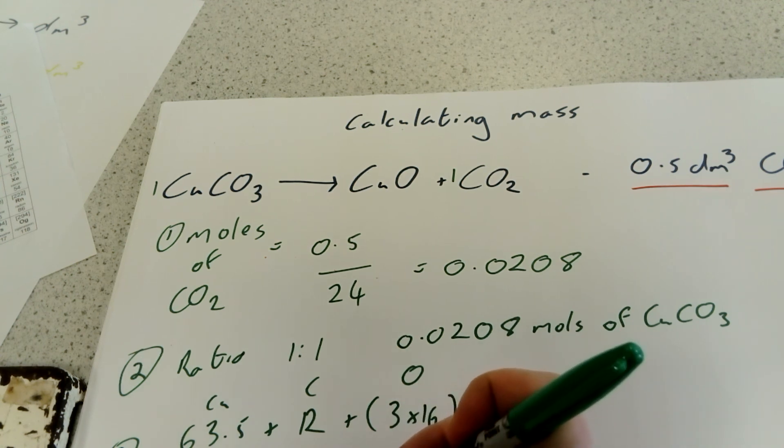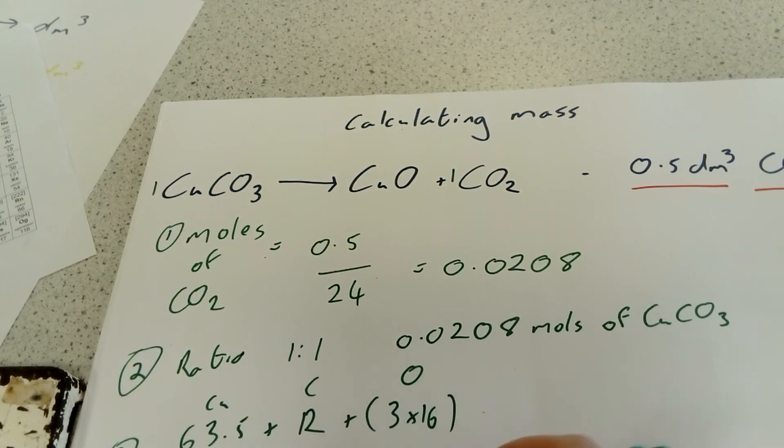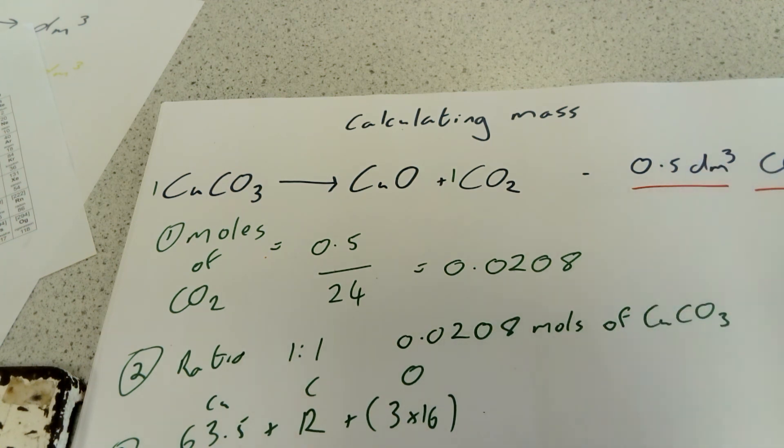So we're going to need 2.569 grams of copper carbonate. That's how you work out the mass in a reaction to make a certain amount or a certain volume of gas.